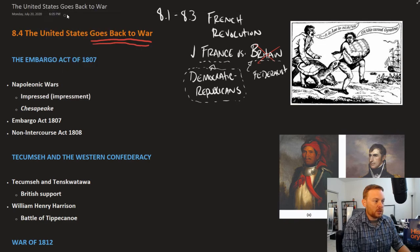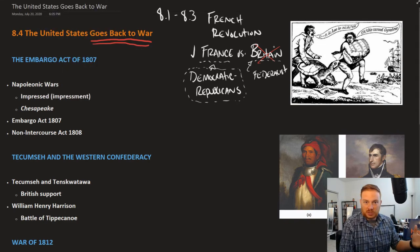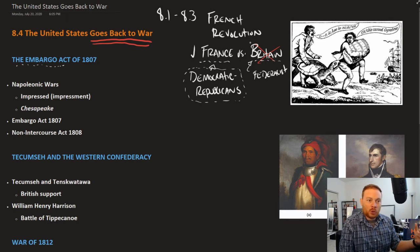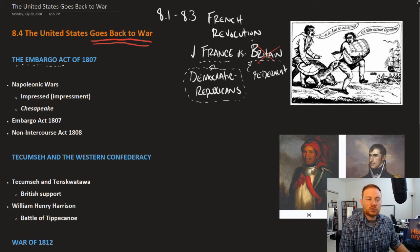One way that Thomas Jefferson dealt with the deteriorating relationship with the British was to pass an embargo on the British. This was a strategy that had been used during the Revolutionary period — the boycotting of British goods proved to be effective. Hopefully, by discontinuing trade, which is essentially what an embargo is, this would bring Great Britain to their knees and make them realize their miscues towards the United States.